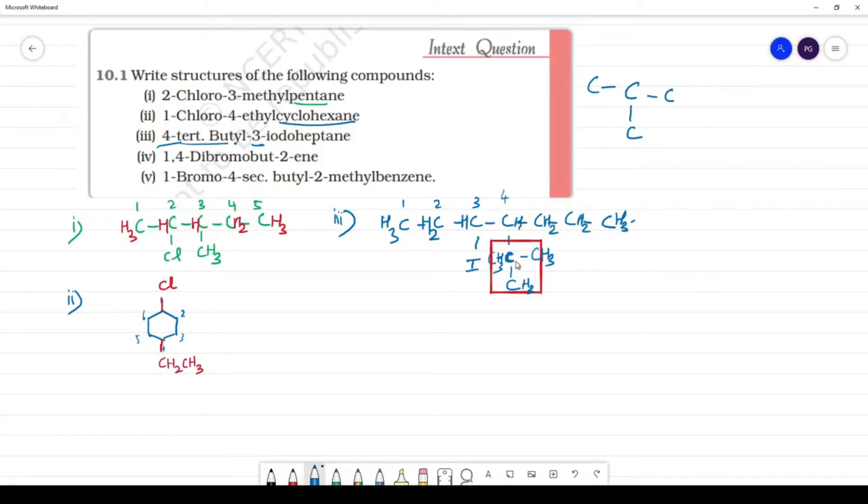CH2, this is CH3. So this is structure of the third compound. Fourth one: 1,4-dibromo-2-butene. 1, 2, 3, 4. Butyl is 4 carbon. Second position double bond is 1, 2, 3, 4. So this is CH2, this is carbon, 2 bonds to satisfy. CH2, this is carbon 3, so this is H.